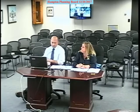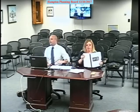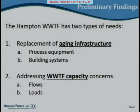In brief, the facility plan identifies two types of needs at the plant: needs associated with aging infrastructure and equipment that has reached the end of its useful life, and needs addressing capacity concerns from Hampton's ongoing growth impacting the plant's ability to treat waste.